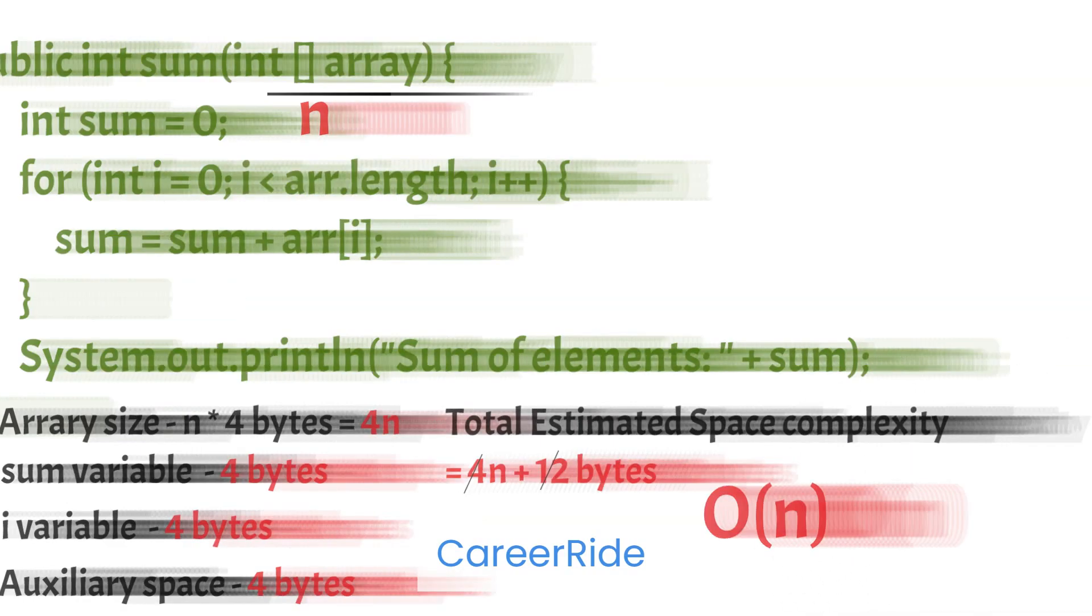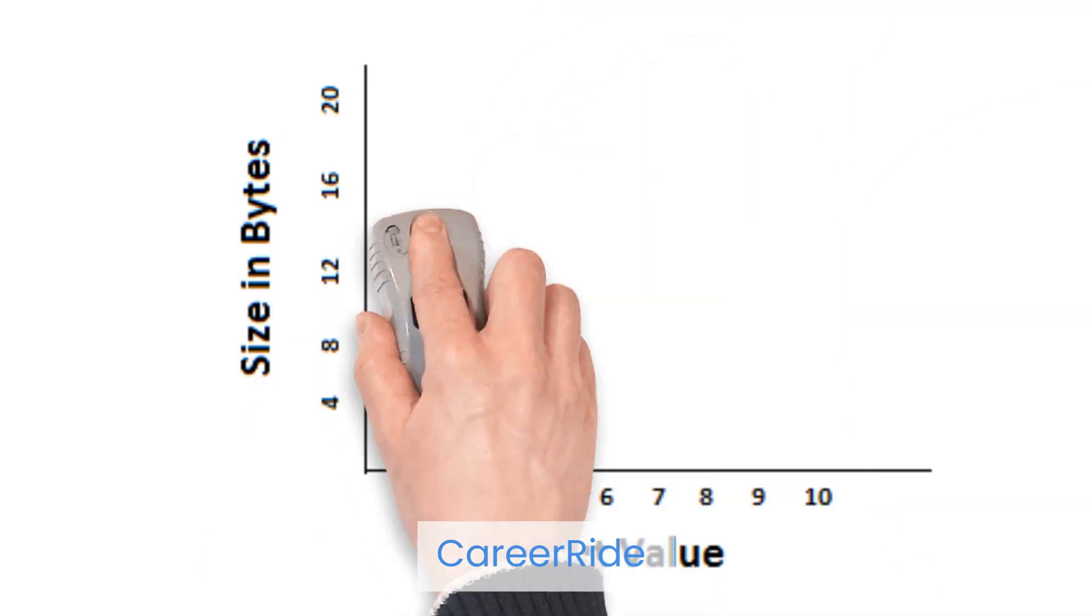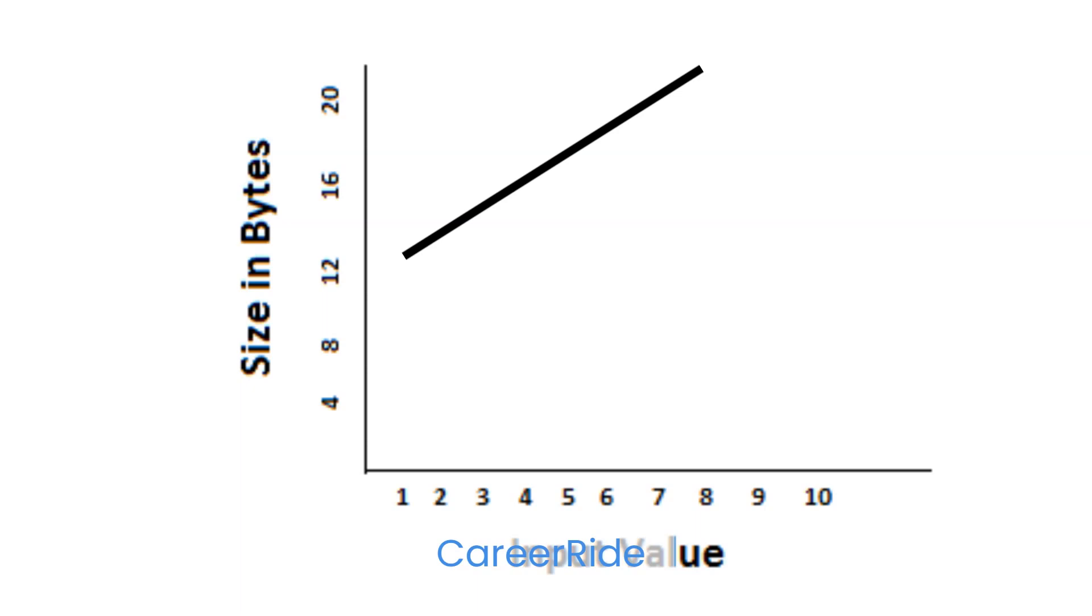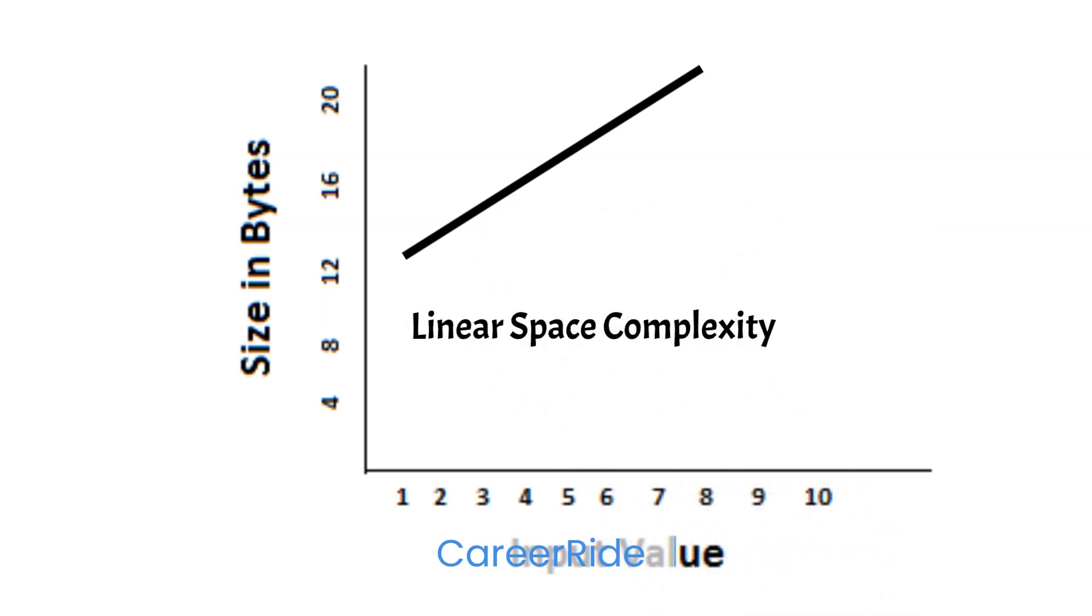Now if you can see the graph of this algorithm depending on the size of array, the line is linear. So this type of algorithm is called linear space complexity. And in big O term it is denoted as big O of n. And space complexity in this case cannot be less than O of n.